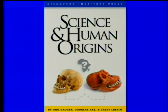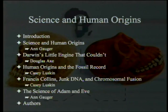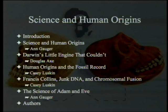For those of you who have viewed previous episodes, I now have the pronunciation of Gauger correctly. There are five chapters; we've gone over them and we've gone over objections to the first four. Today we're going to be concentrating particularly on the Science of Adam and Eve by Ann Gauger.